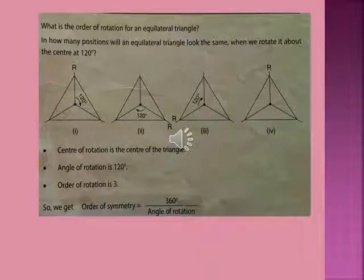Can you guess what is the order of rotation for an equilateral triangle? An equilateral triangle has three equal sides. As we said, the number of equal sides equals the order, so its order is 3 and lines of symmetry are also 3. The equilateral triangle has 3 as its order of rotational symmetry. To calculate the angle: 360 ÷ 3 = 120 degrees. The center of rotation is the center of the triangle.